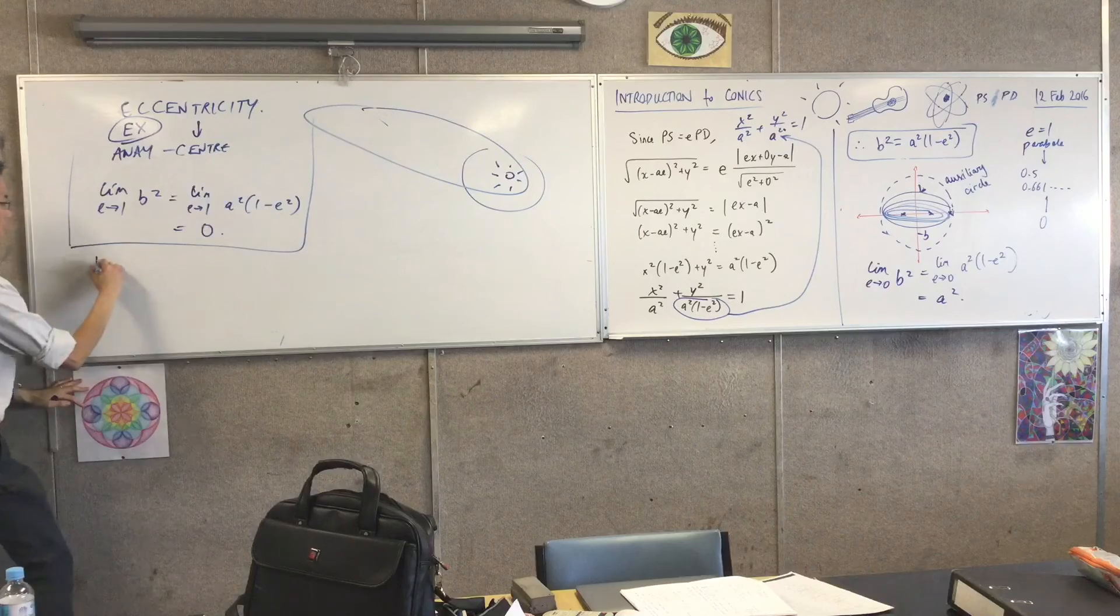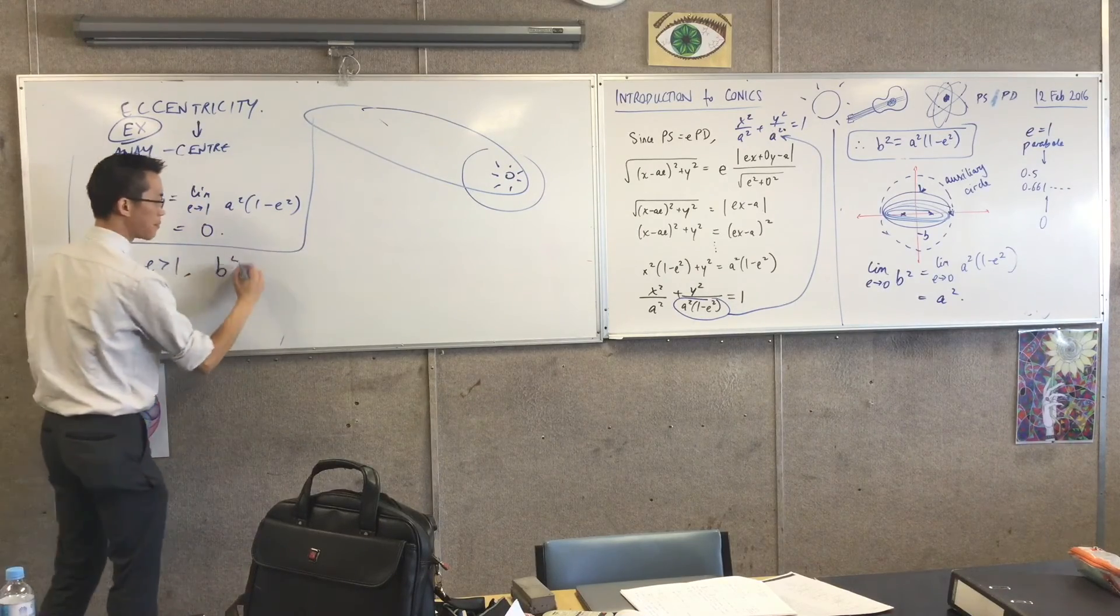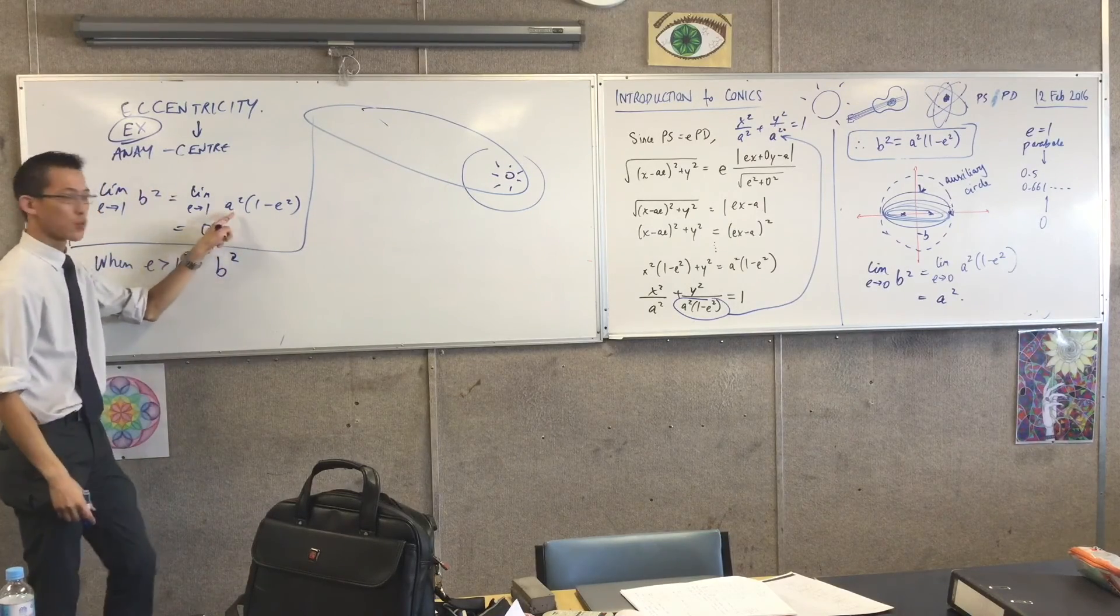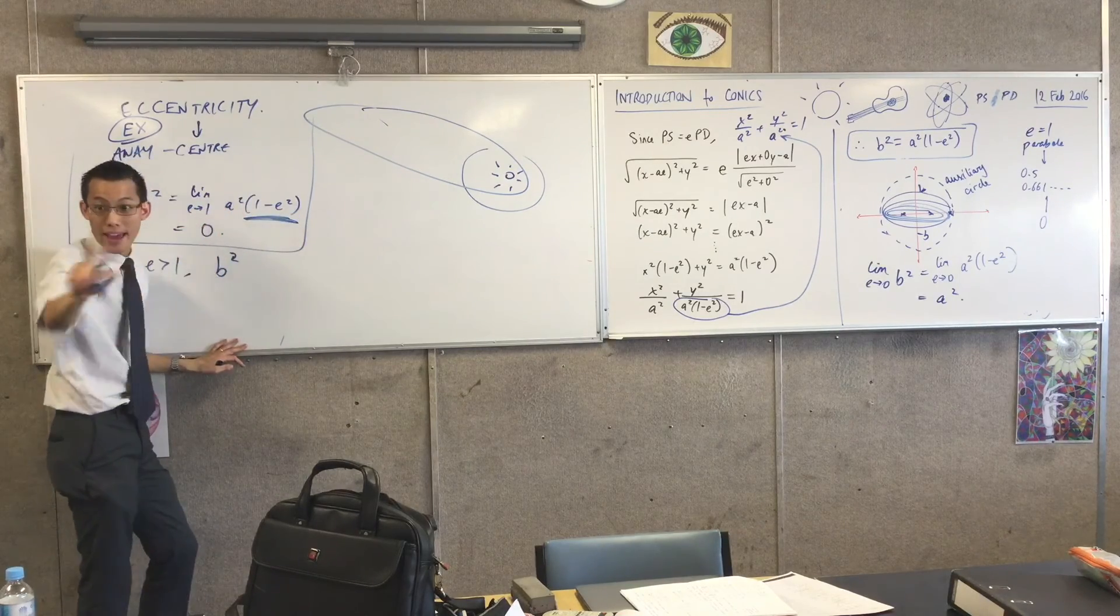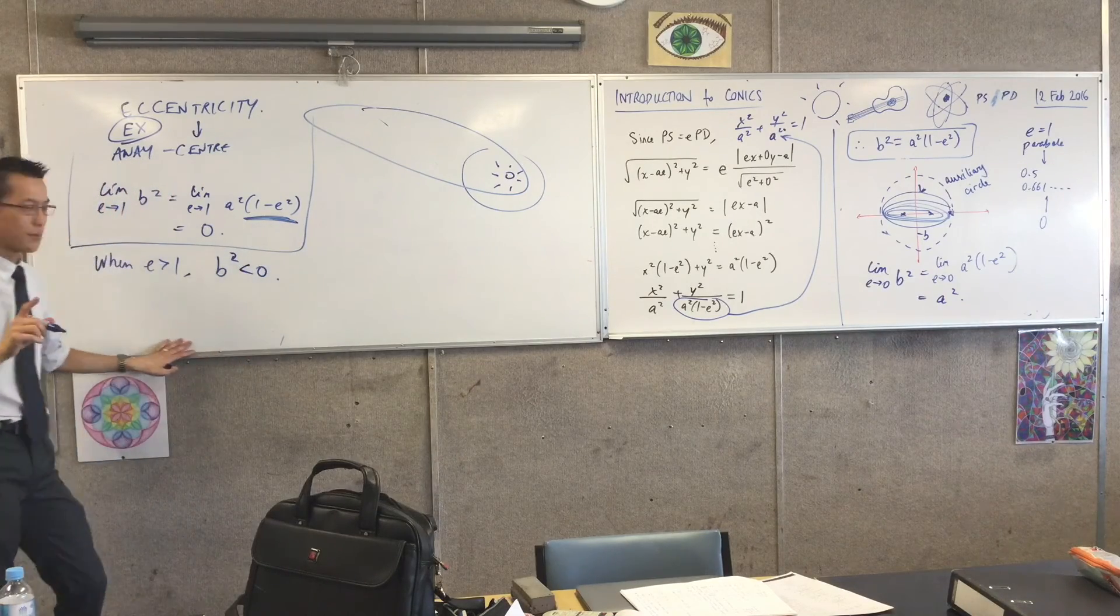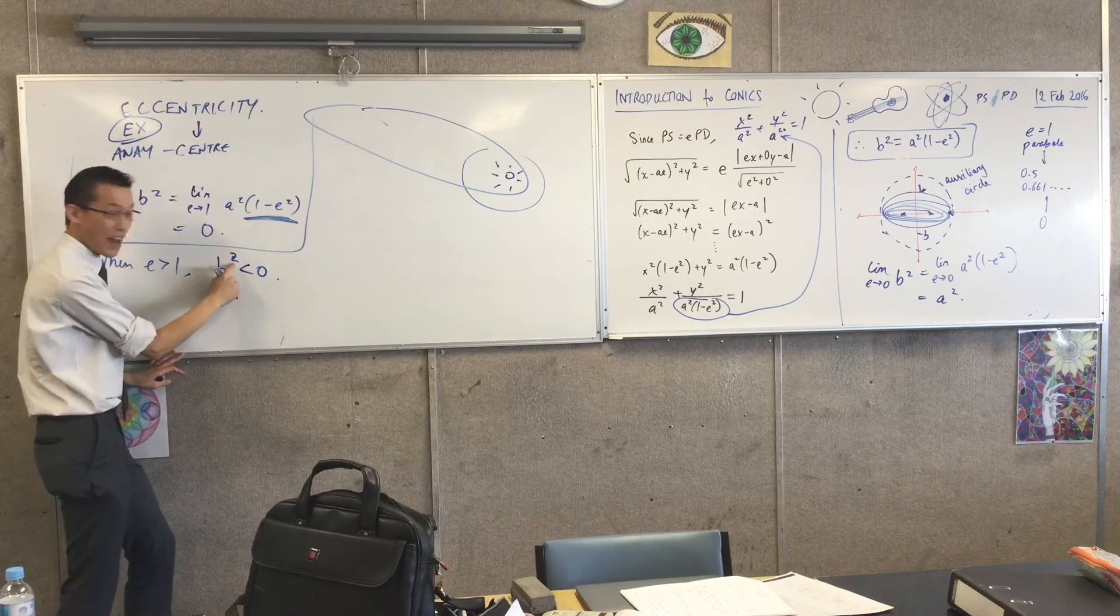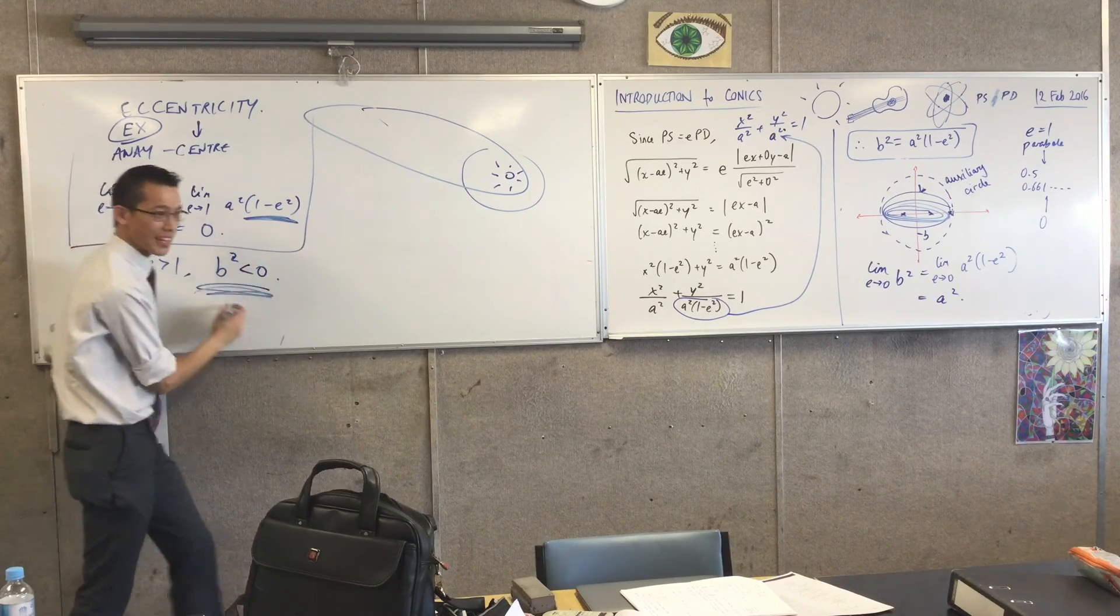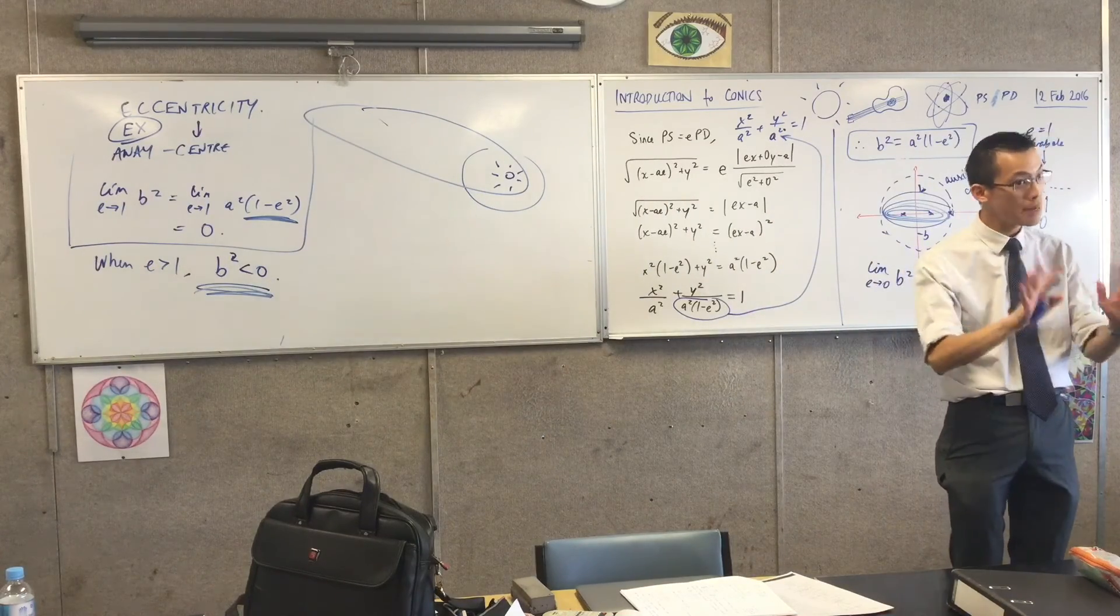Well, watch this. When e is greater than 1, what do we know about b squared? Look at it. Remember, b squared is a squared times 1 minus e squared. If e squared is bigger than 1, what happens to this guy? He's negative. Oh, that's why it flips on this side. Now, remembering that b is a length, and we're squaring it, and apparently we're getting something negative, this tells us that whatever it is, it's something quite different entirely, and we will meet it next week.